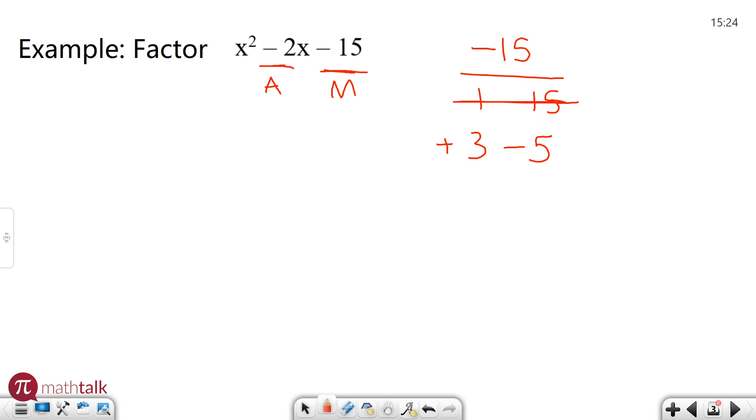So I'm going to write out the form x plus or minus a number, x plus or minus a number, and I'm going to fill in these two values. Positive 3 or plus 3 and negative 5 or minus 5. And these are my two factors. Here's my answer.